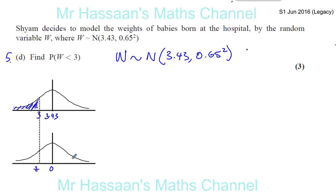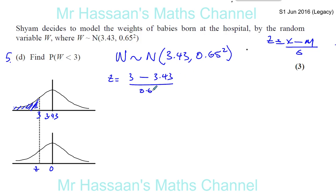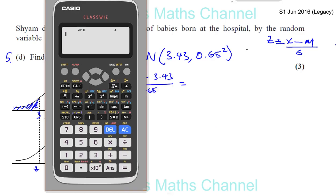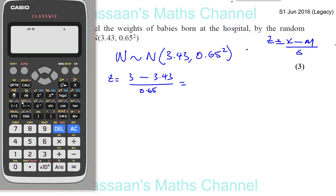We need to standardize our value. Z equals x minus mu over sigma — that is, 3 minus the mean of 3.43, divided by the standard deviation of 0.65. This tells us how many standard deviations the value is below the mean. So Z equals (3 minus 3.43) divided by 0.65.